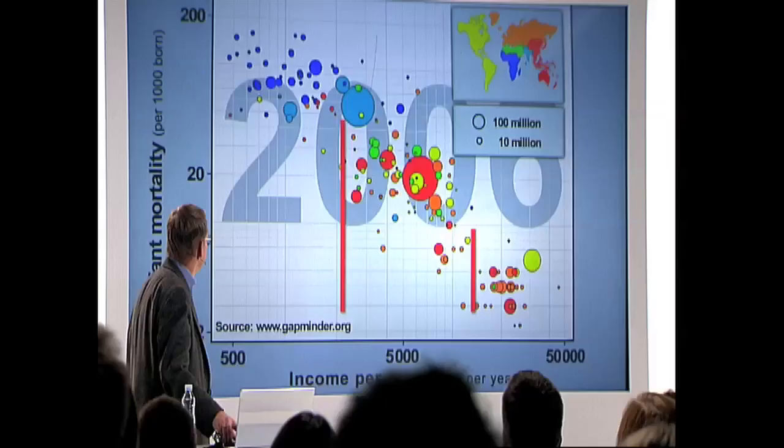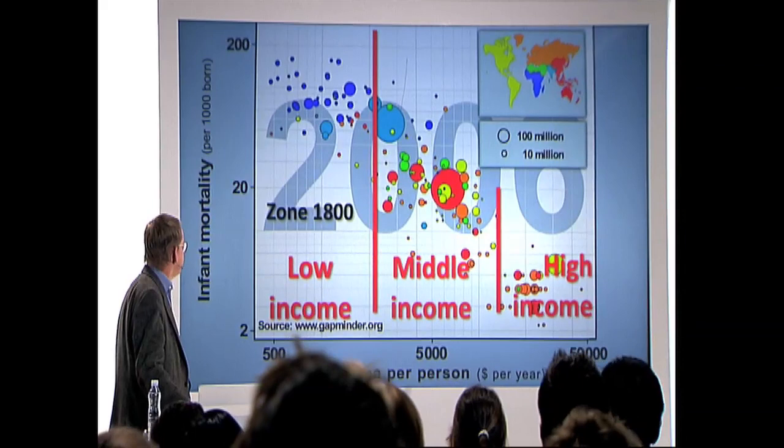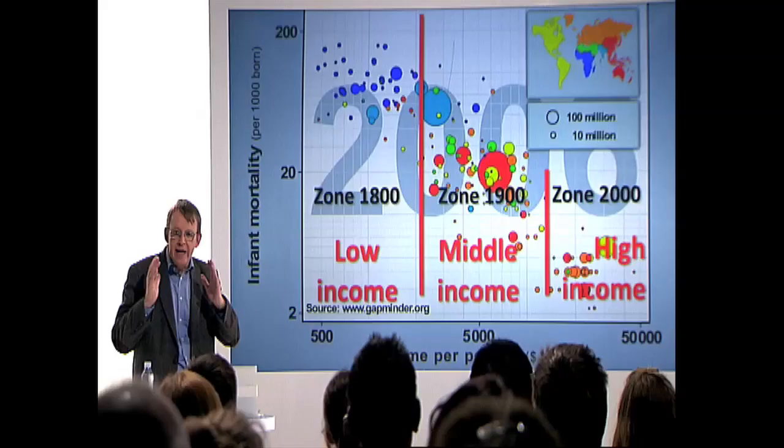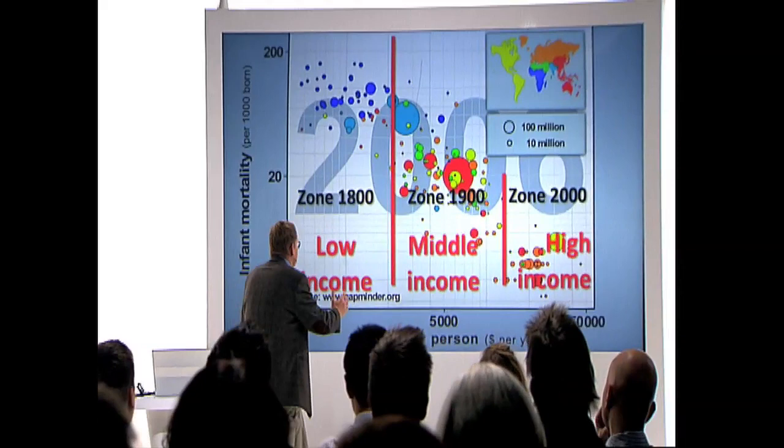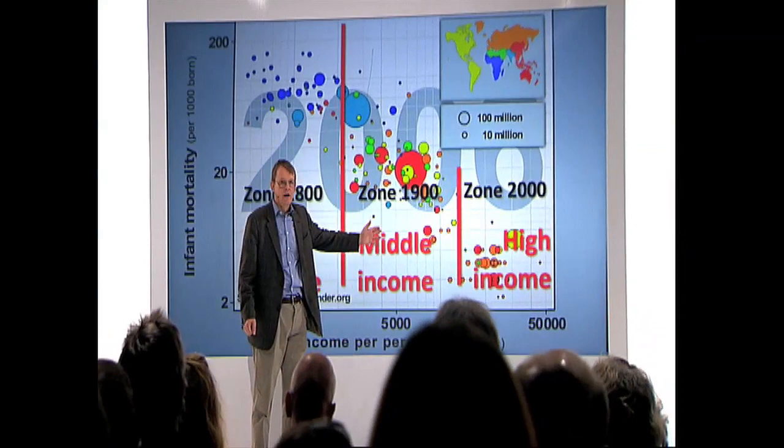Forget about two types of countries. It's not about whether you should call them developing countries or third world or south or anything. There are just no thing as two groups any longer. At least let us divide that in three groups: low income, middle income, and high income. So in 1800, so in 1900, so in 2000. It's very rough, but it's a way of making the head much more clear. And most of the people in the world, they live here in the middle. They live like people in Sweden lived from 1900 to 1999.